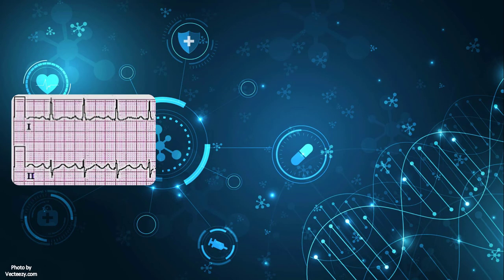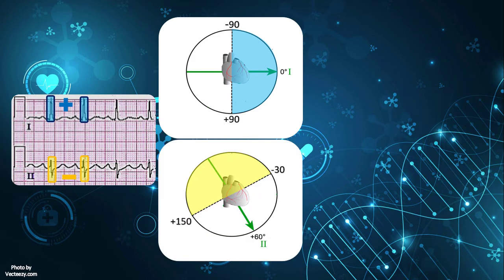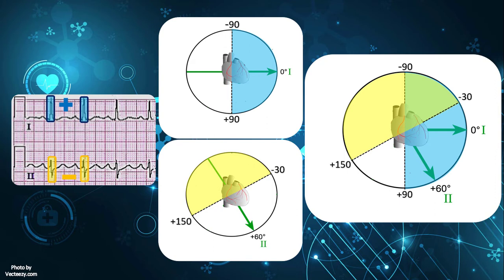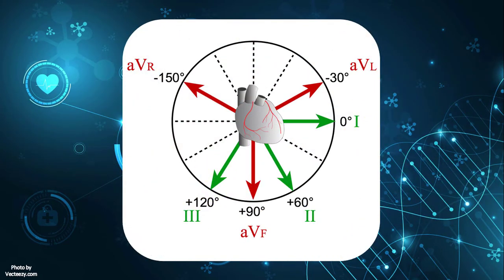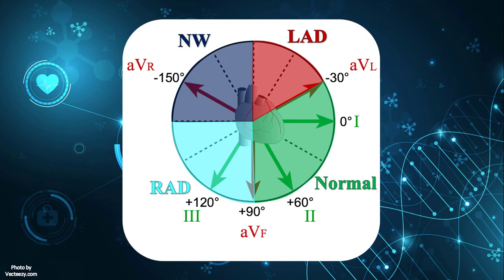For example, if QRS complexes are positive in lead 1 and negative in lead 2: positive QRS in lead 1 means the axis is toward lead 1, somewhere between minus 90 and plus 90 degrees. Negative QRS in lead 2 means electrical forces are away from lead 2, placing the axis between minus 30 and plus 150 degrees. The axis is therefore at the intersection of these two ranges. In adults, normal heart axis extends from minus 30 to 90 degrees. From minus 30 to minus 90 degrees is left axis deviation, and from 90 to 180 degrees is right axis deviation. Extreme or northwest axis deviation is anywhere between minus 90 and 180 degrees.